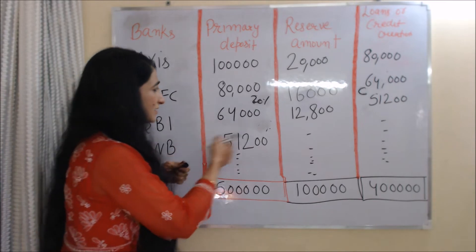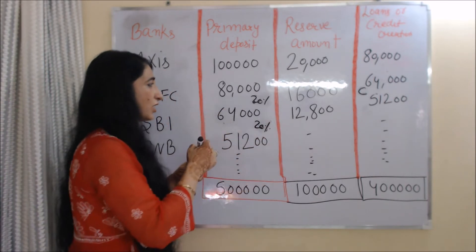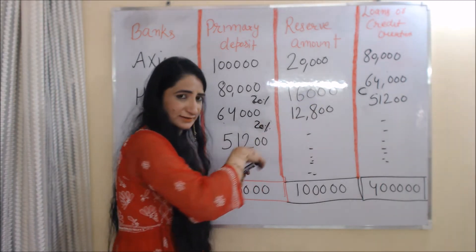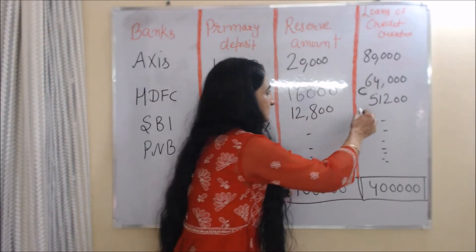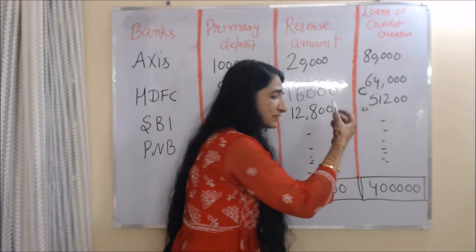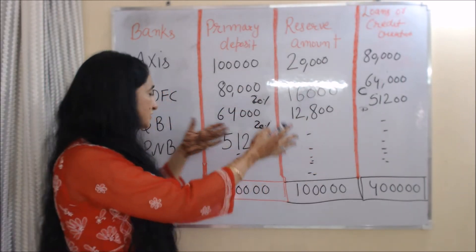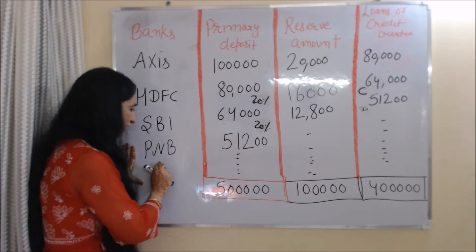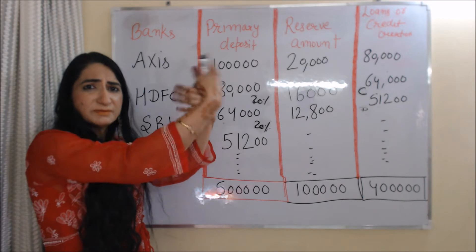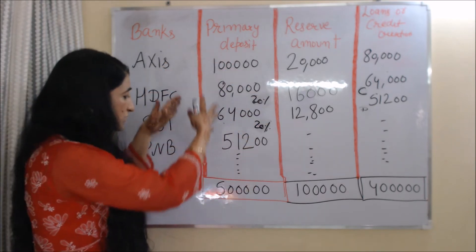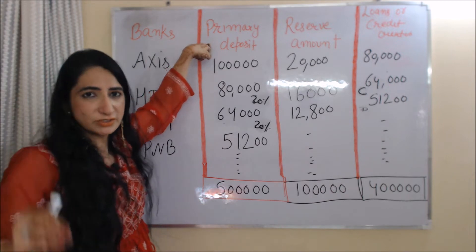Again, SBI Bank keeps 20% as a reserve. 20% of 64,000 is 12,800, and the remaining 51,200 is given as a loan to Person D. Person D buys some machinery with this amount and pays the shopkeeper, who deposits the money in PNB Bank. PNB Bank again keeps 20% as a reserve and the remaining money is used for loans. This process will continue until the primary deposit becomes almost zero.